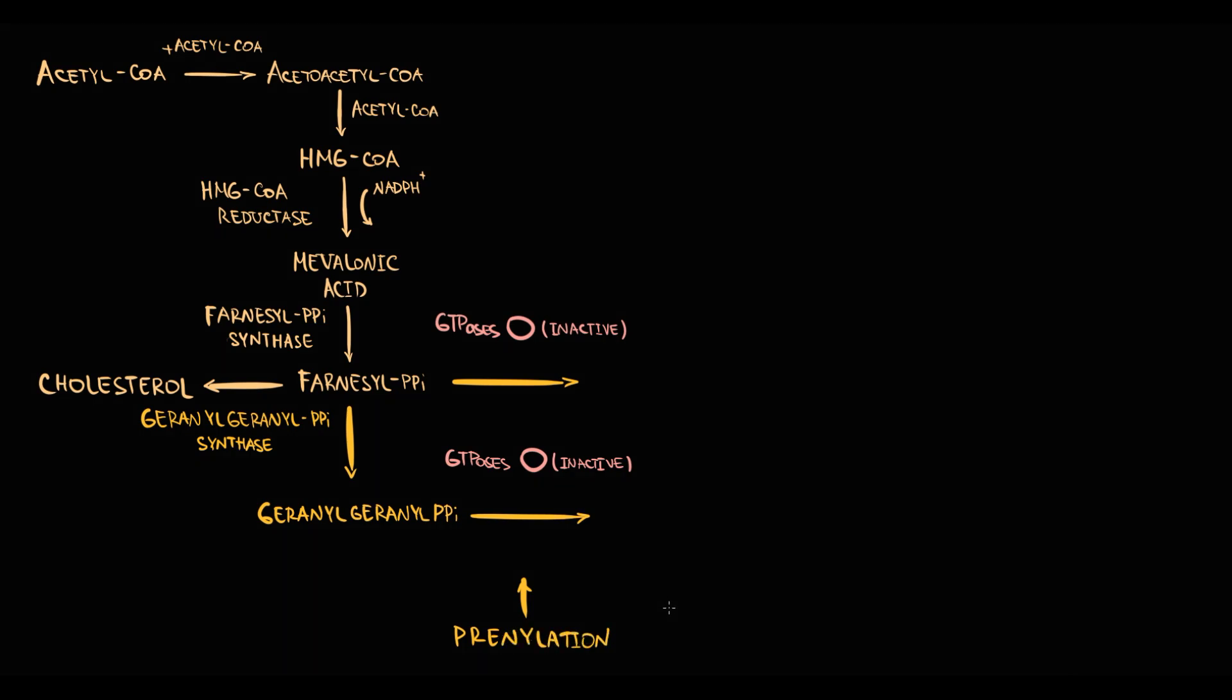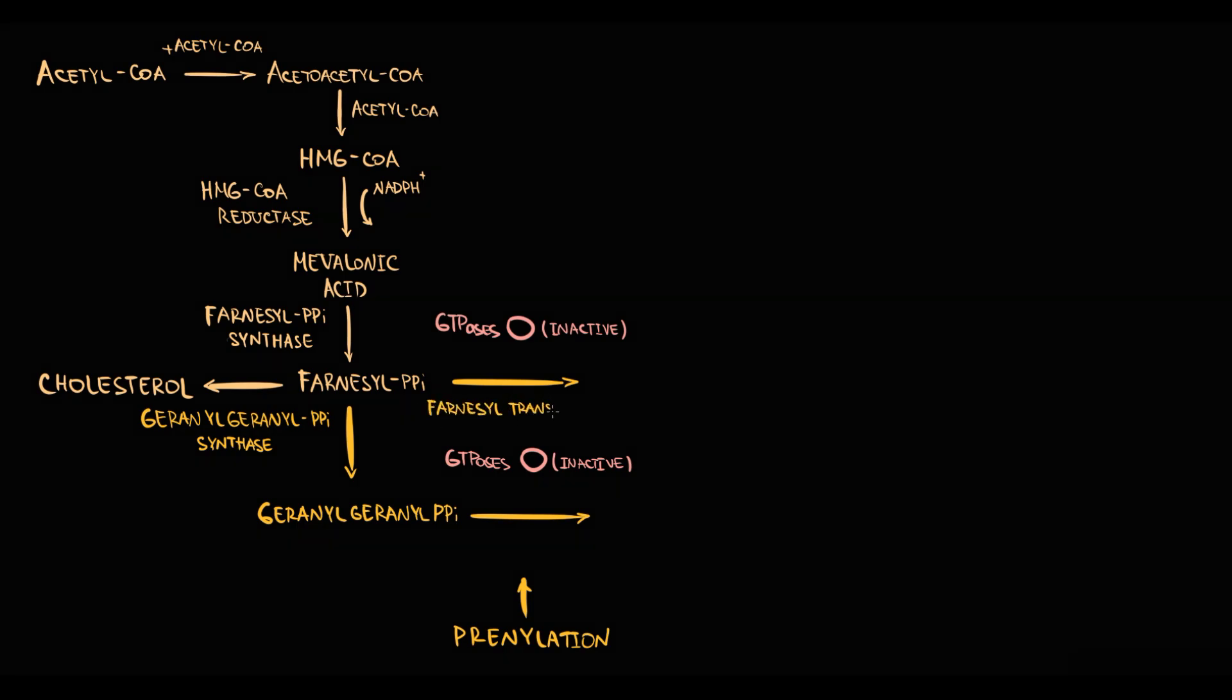The first one is called farnesylation. Farnesylation is provided by farnesyl transferase and is used for activation of RAS protein. In the farnesylated state, RAS protein is in activated form.